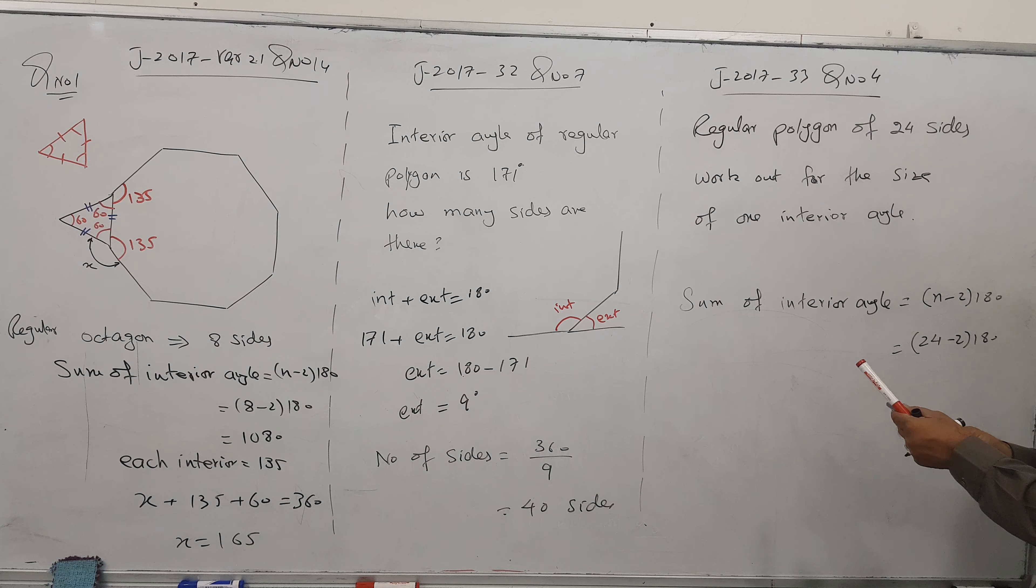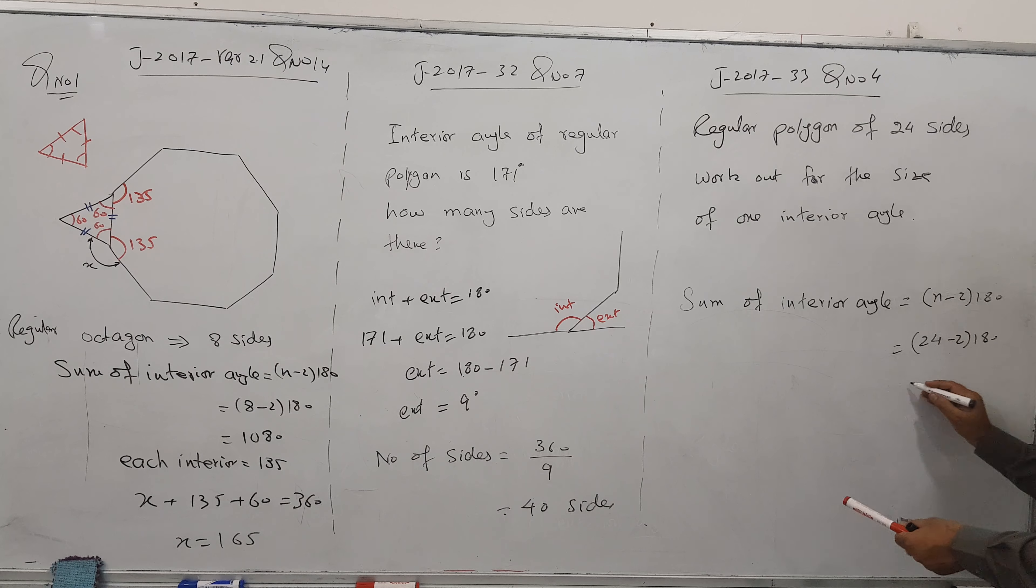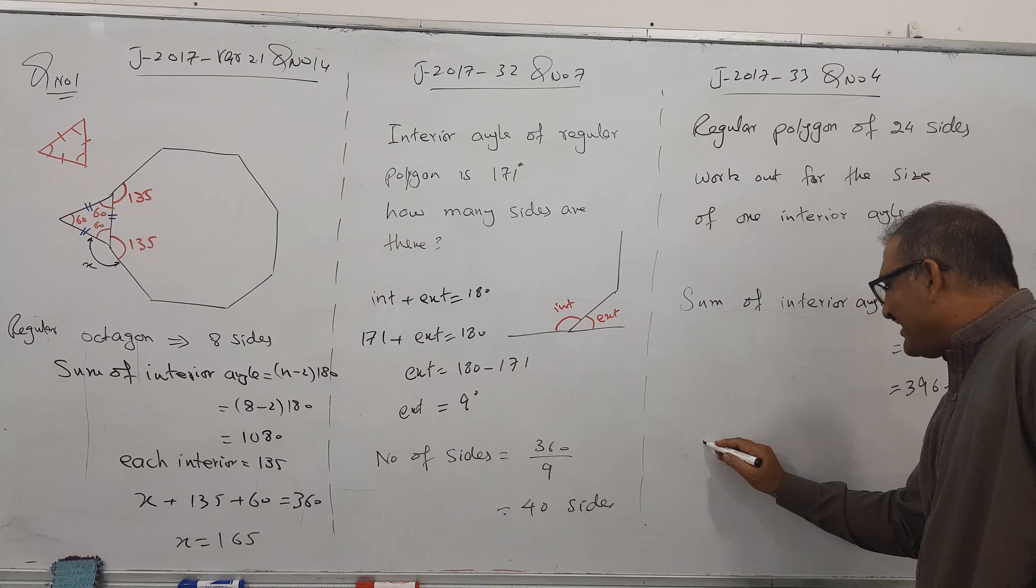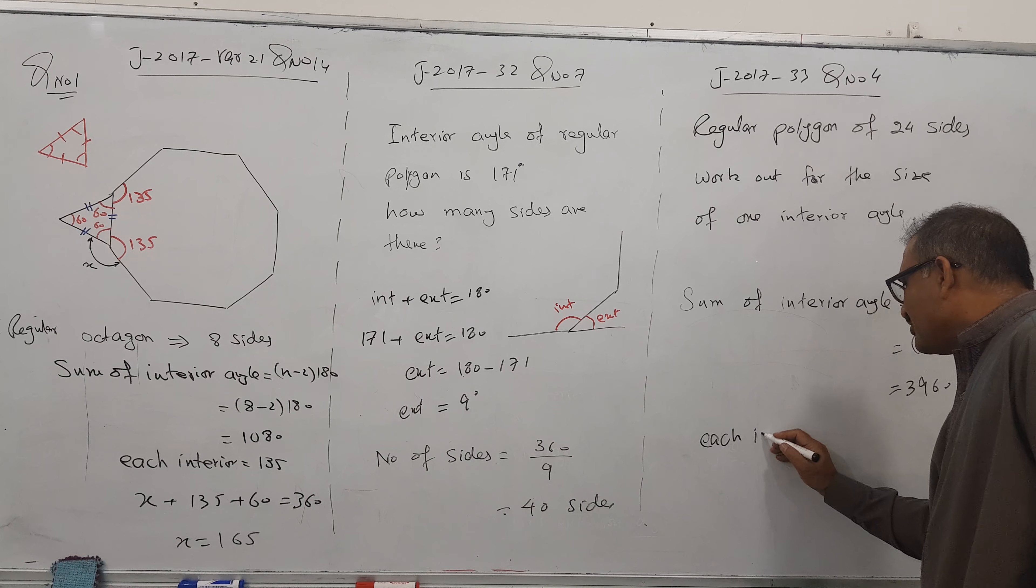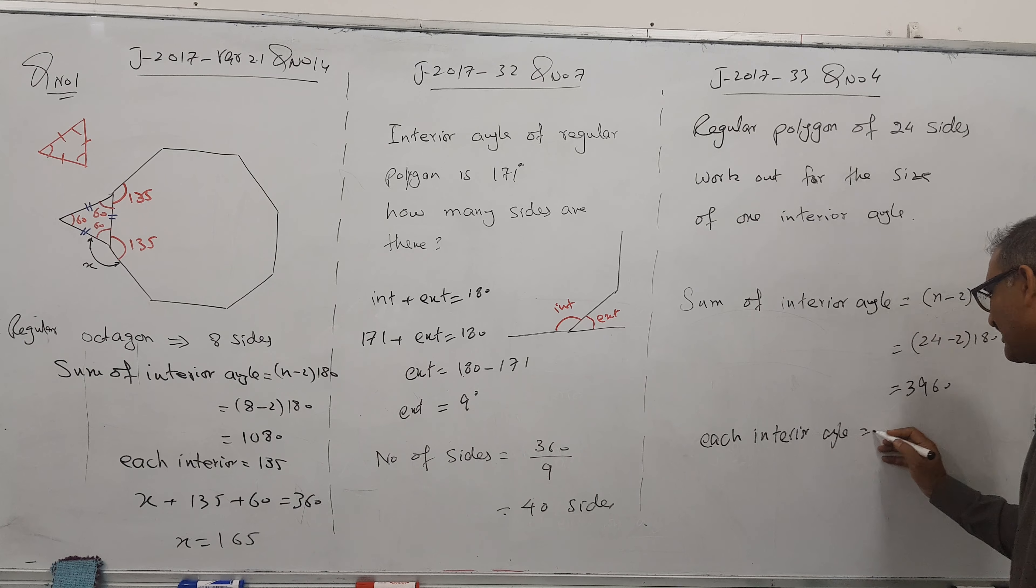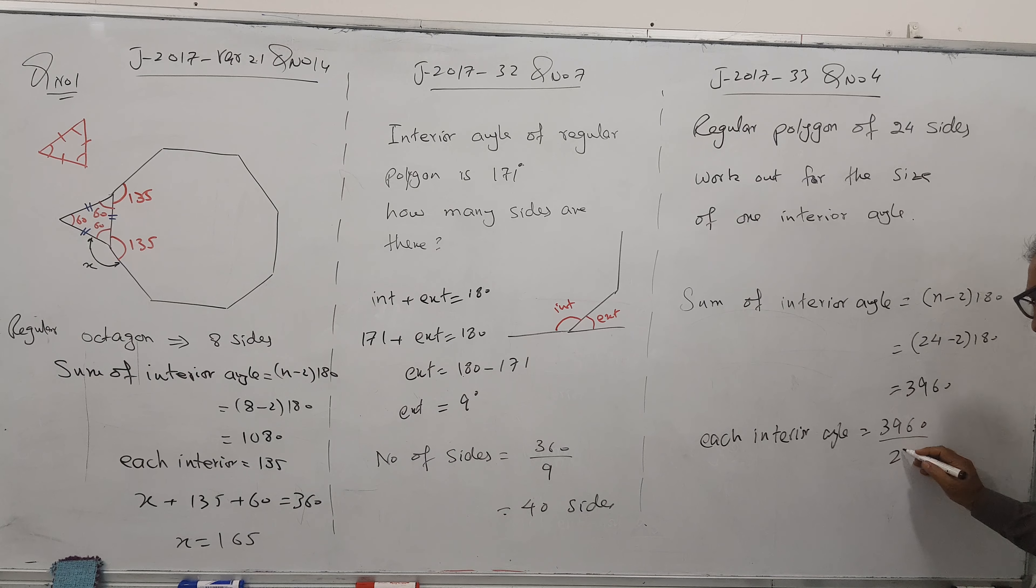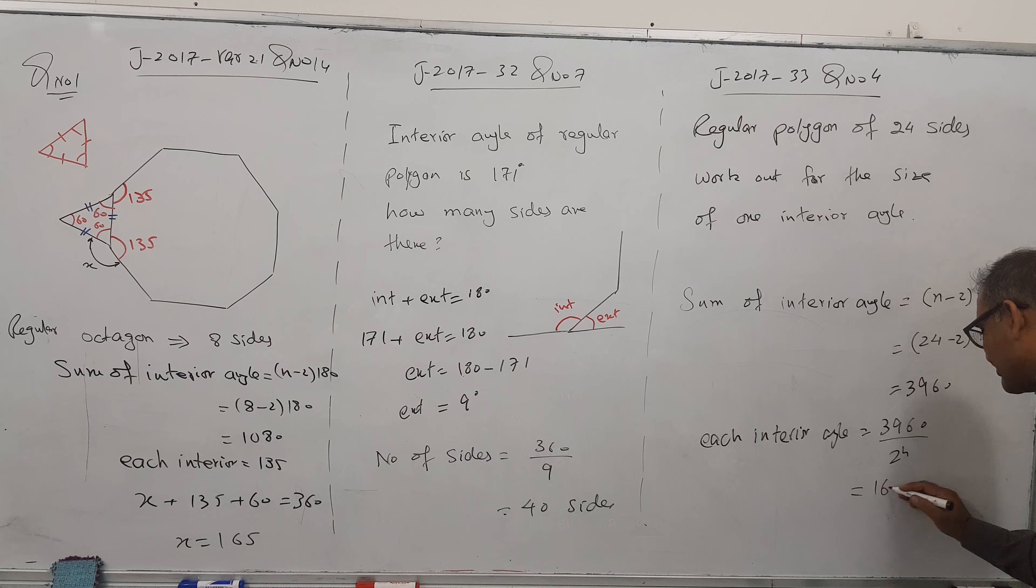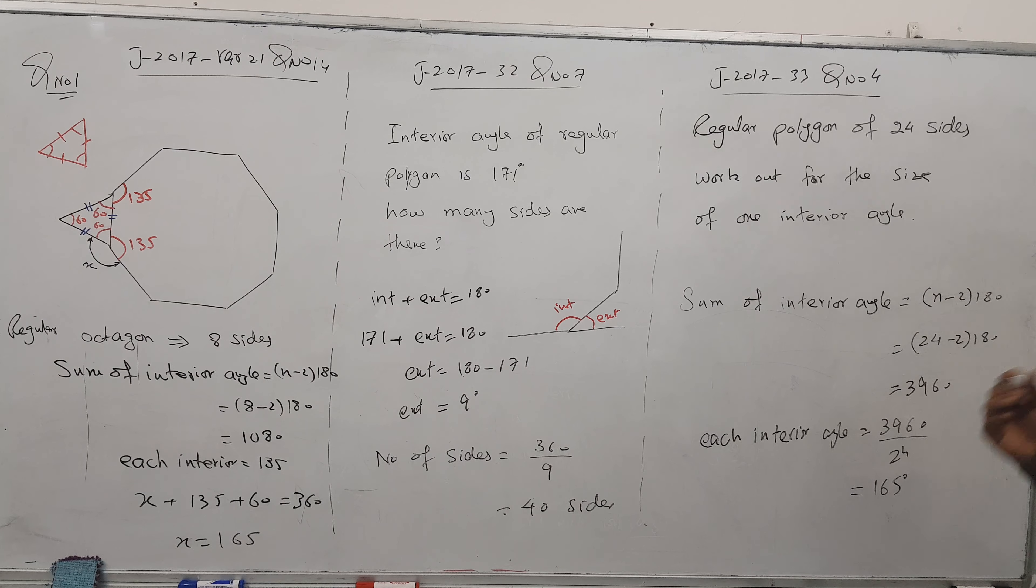So it means 22 times 180 gives us 3960. But I don't need all interior angles, I need one. How to find each interior angle? Each interior angle: 3960 divided by number of sides, 24. Divided by 24, I got 165 degrees.